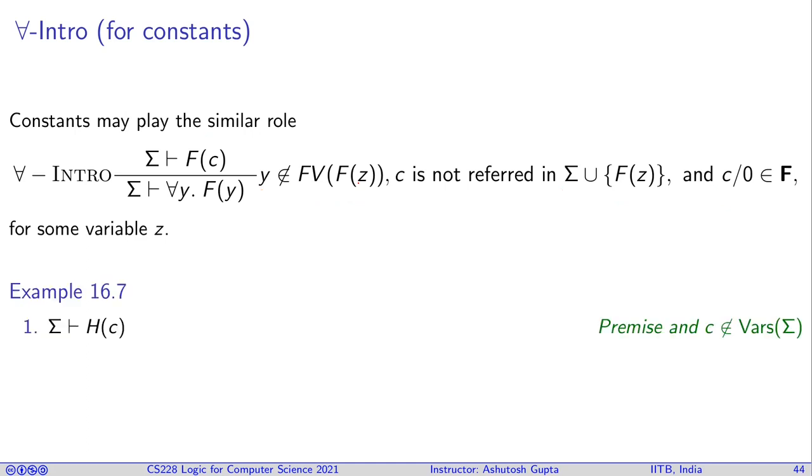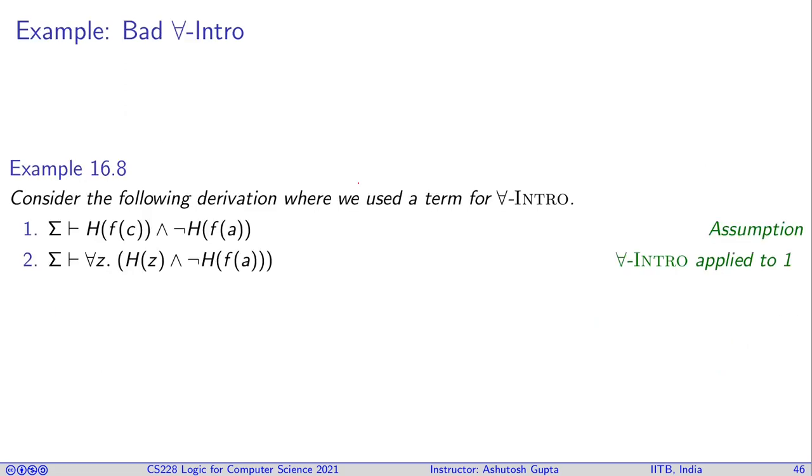So, we can do that. So, for example, you can, if you can derive H(c). And you know that c does not appear anywhere in sigma, then you can say for all y. So, that is the trick.